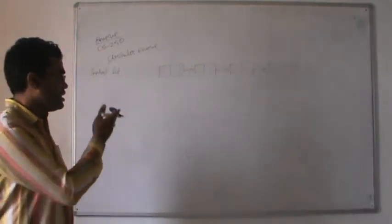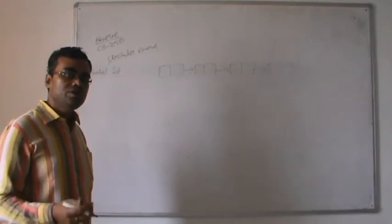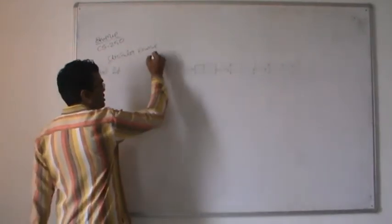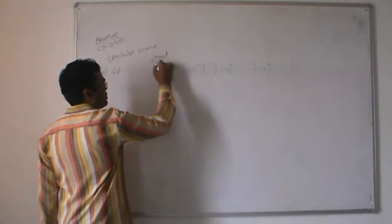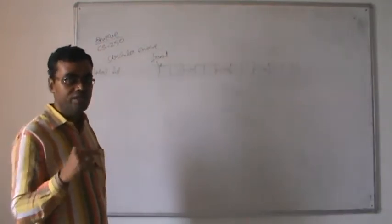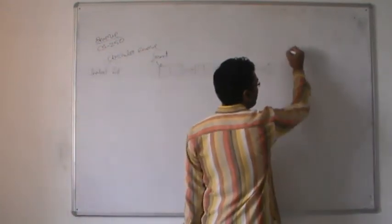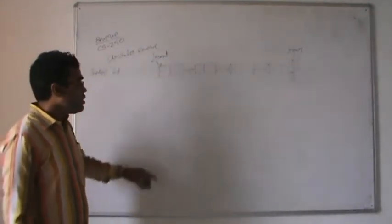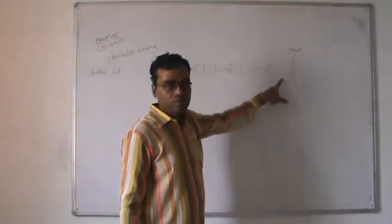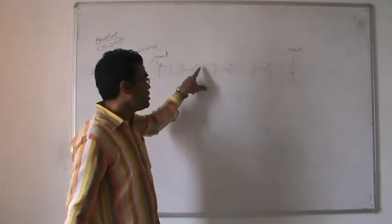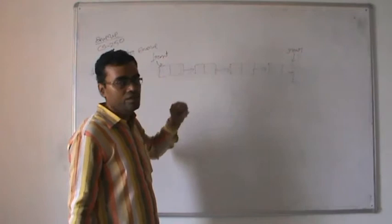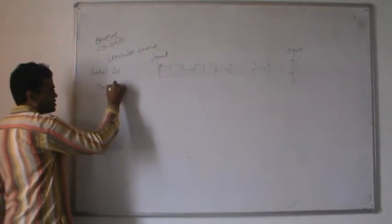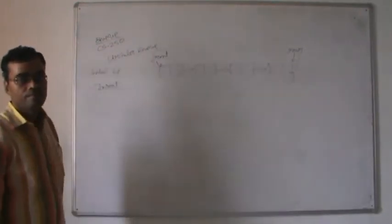In the linked list representation, the front pointer points to the first node and the rear pointer points to the last node. All deletions take place from the front and all insertions take place from the rear. Every node has two parts - the data part and the pointer to the next node. Now let's see how to perform the insert operation in the queue with linked list representation.